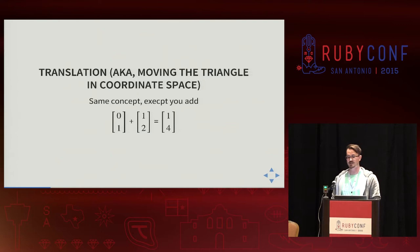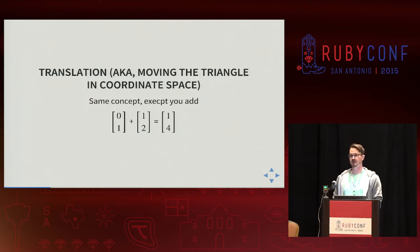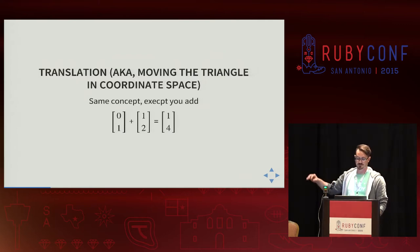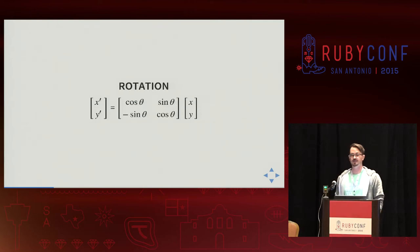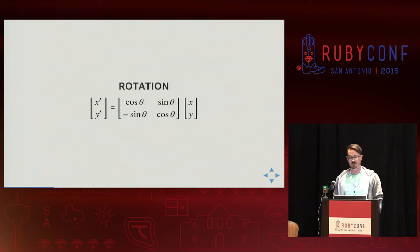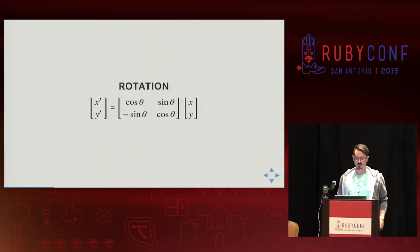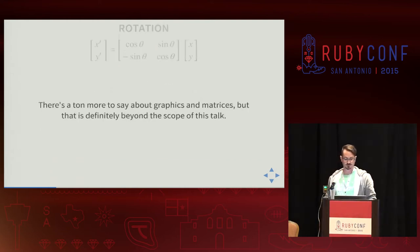Another transformation we can do is translation, which is the same concept except you're moving the triangle around in x and y coordinates in coordinate space. You could also rotate the triangle's vertices by applying a transformation — you're actually multiplying by a matrix of sine and cosine to rotate that vertex 90 degrees.